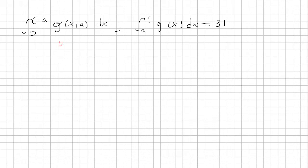So, this one, we're going to make a substitution again and let u equal whatever is inside the parentheses. So, du will be just dx. So, x is c minus a, so plug that in here, and we get c, and then when x is 0, we get u equals 0 plus a, which is a. So, this just transforms into the integral from a to c of g u du, which is exactly what we have over here, and that's going to be 31.